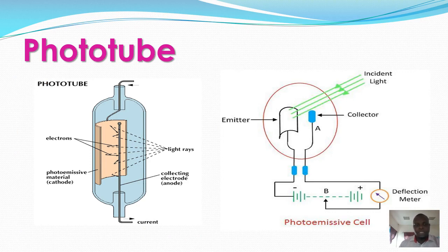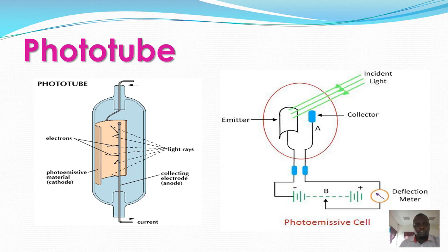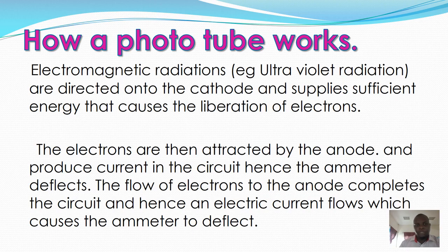We have a diagram for the photo tube which shows that when light falls on the photoelectric surface, it will emit electrons. In so doing, current will flow in the circuit. As you can see in our second diagram, we have light incident on a photoelectric surface and there will be deflection at the ammeter. That is a photo tube and it is an example of photoelectric emission.